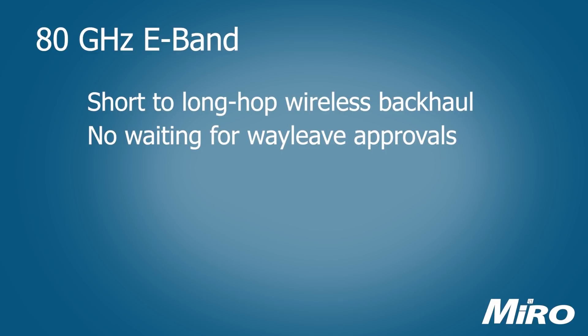E-band is also a great solution for redundancy on fiber ring networks, keeping your critical links up and running when your fiber network is down due to theft or damage. And thanks to the extreme throughput capabilities of E-band equipment, this does not necessarily have to be at the cost of performance.